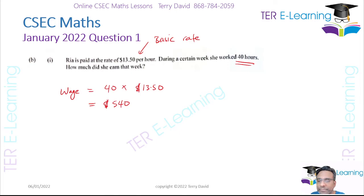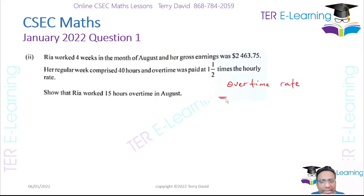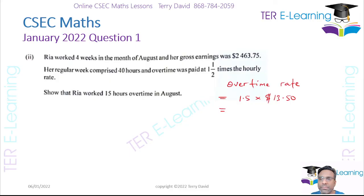She works four weeks in the month and her gross earnings is $2463.75. A regular week is 40 hours and overtime is paid at one and a half times the hourly rate. So I should work out the overtime rate first. Since it's one and a half times, it's 1.5 multiplied by the basic wage rate of $13.50, so that's 1.5 by 13.50.